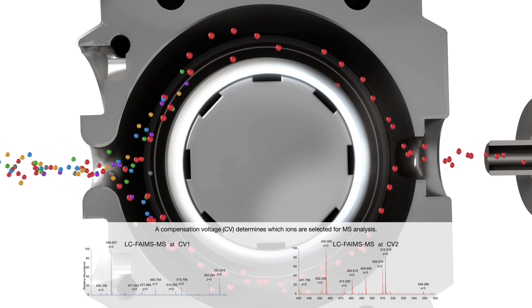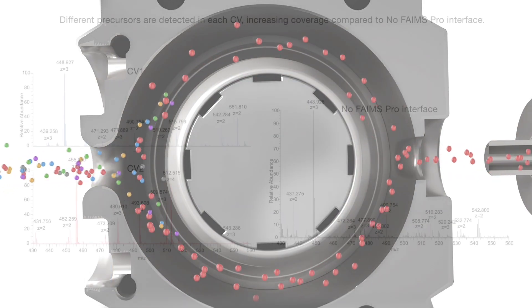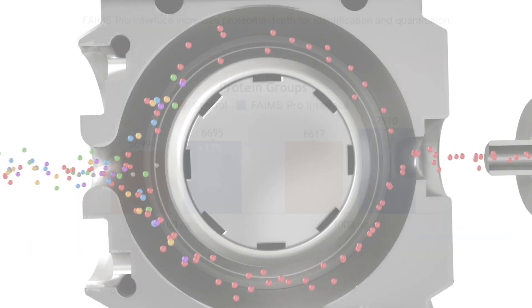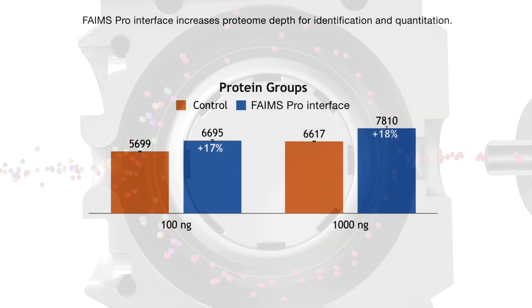Short residence times in the interface permit multiple CV steps sampled per experiment. Online fractionation substantially increases the unique peptide ions detected, sequenced, and either relatively or absolutely quantified without the need for extra sample preparation steps.